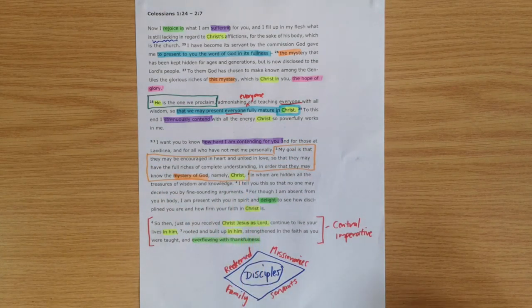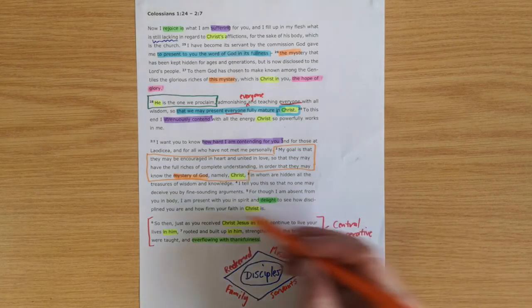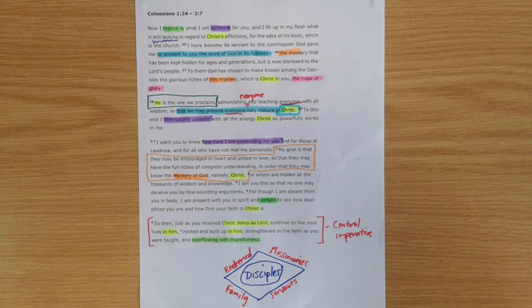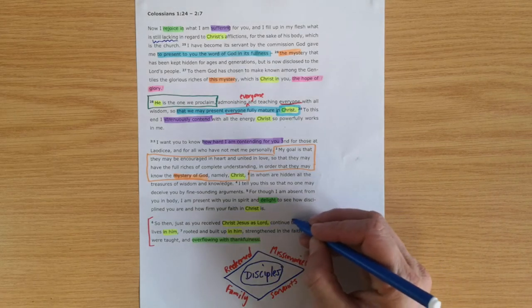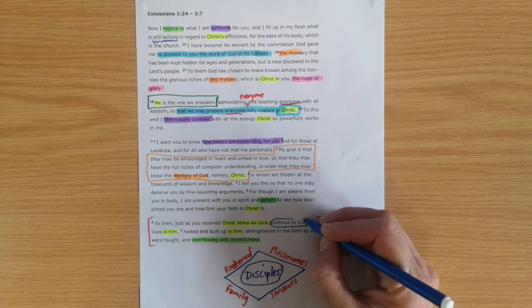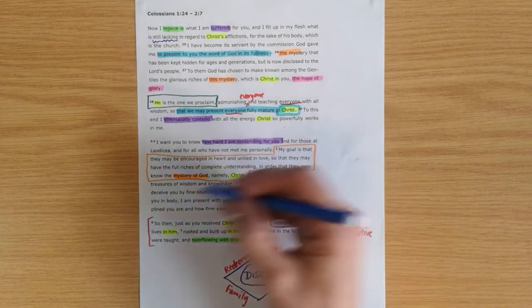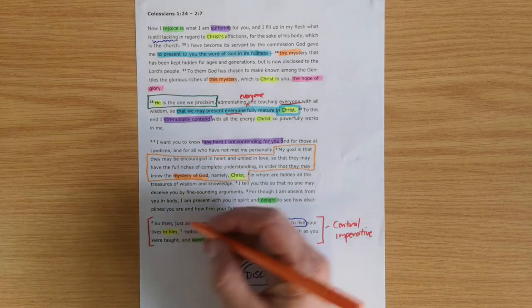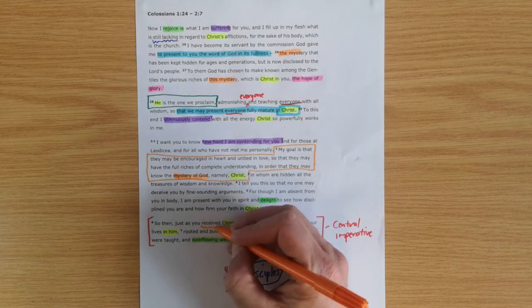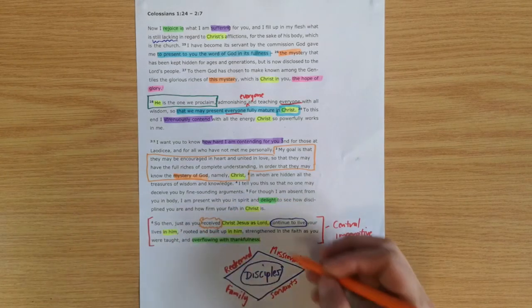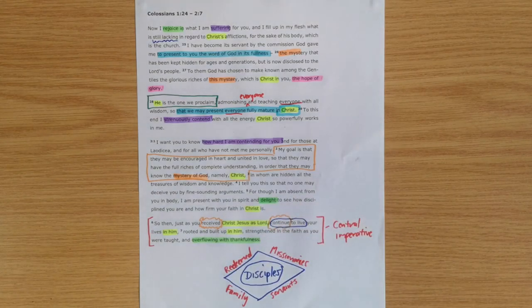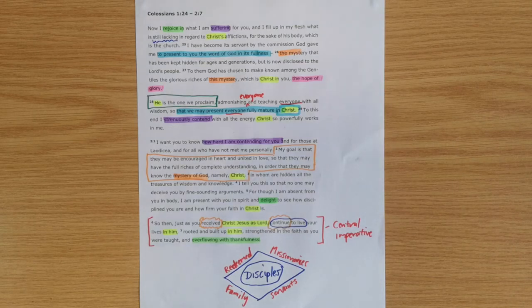In order that you may know the mystery of God, namely Christ. Paul is working hard to put the spotlight and keep the spotlight on Jesus. Then we get to this central imperative: the imperative itself is 'continue to live'—speaking about the whole of verses 6 and 7. It says, 'Just as you received Christ Jesus as Lord...'